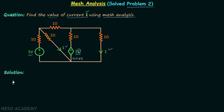Let us quickly perform all the steps required to obtain current i. In mesh analysis, step number one is to identify the total number of meshes present in the network. Here we have one, two, and three meshes, so the number of meshes is equal to three.